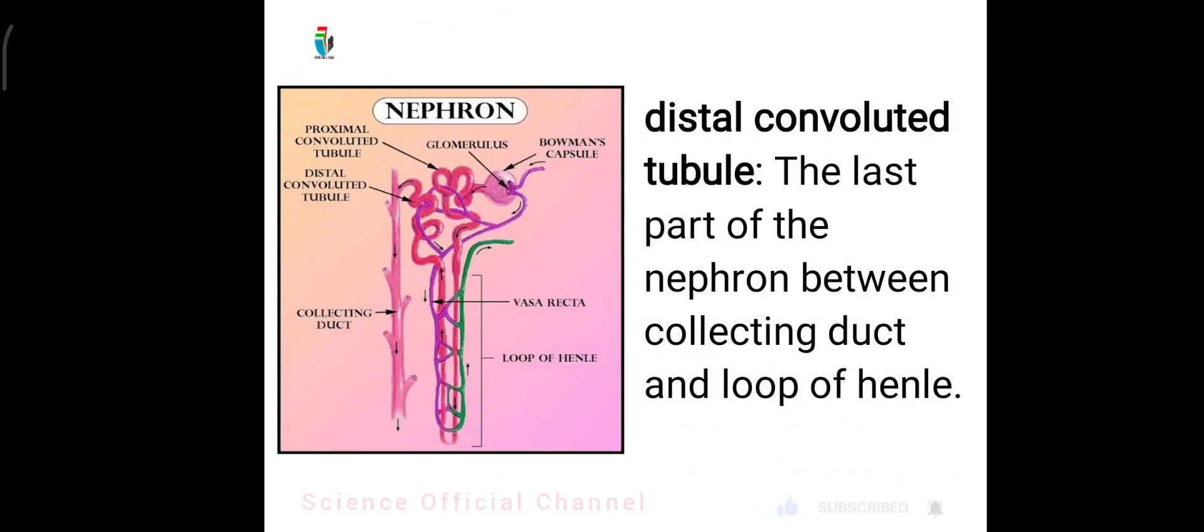Distal convoluted tubule: The last part of the nephron between collecting duct and loop of henle.